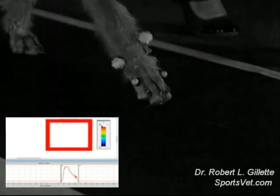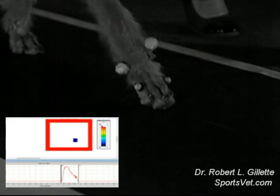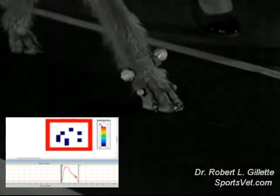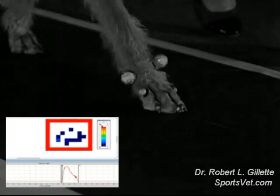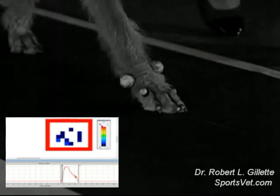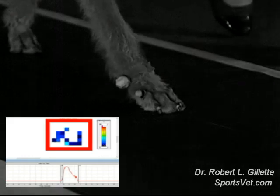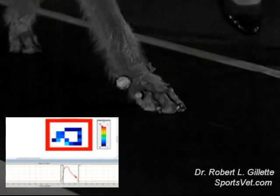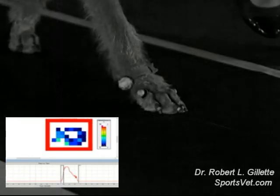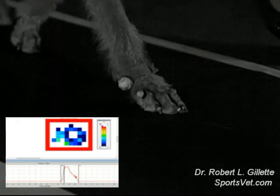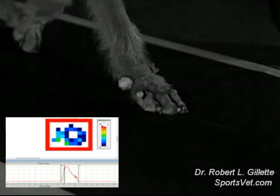We used an Olympus high-speed video camera capturing at a rate of 1,000 pictures per second to capture three views of the paw impact of a dog walking on a pressure-sensing walkway, capturing data at 500 hertz.